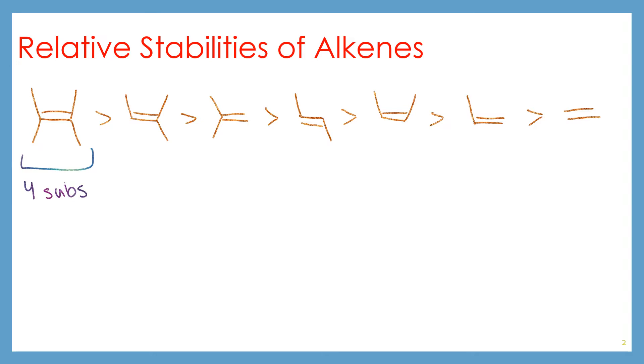So an alkene with 4 substituents is going to be more stable than an alkene with 3 substituents. Another way to look at that is that alkene has 1 hydrogen. Alkenes with 2 substituents are less stable than 3 substituents. And typically a trans alkene is going to be more stable than a cis alkene.